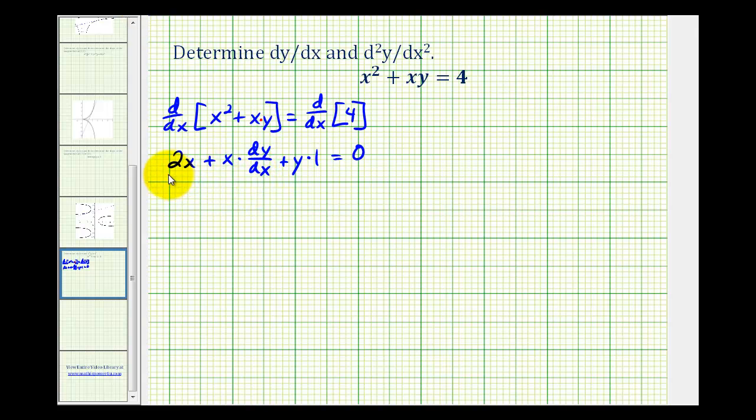So we'll go ahead and move 2x and y to the other side of the equation. So we'll have x times dy/dx equals negative 2x minus y. And now we can divide both sides by x. So the first derivative, or dy/dx, is going to be equal to negative 2x minus y divided by x.